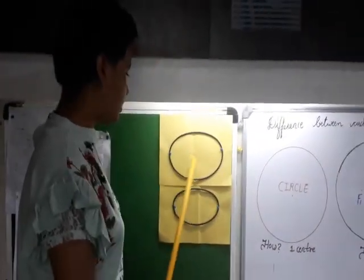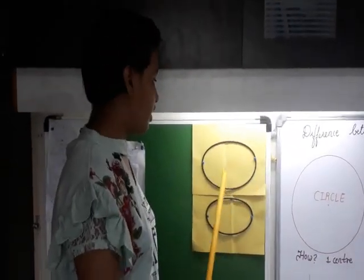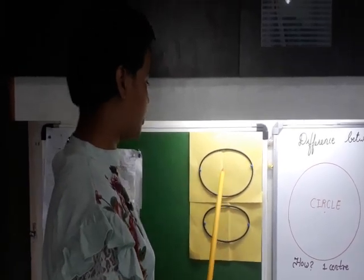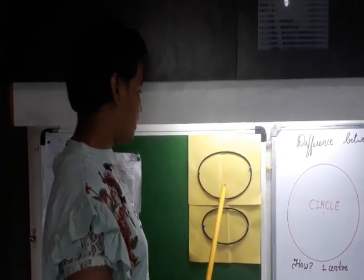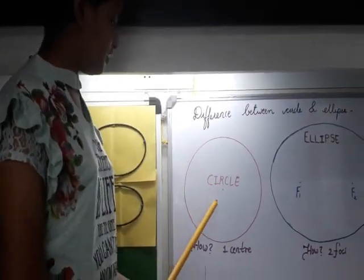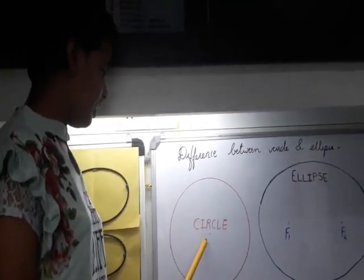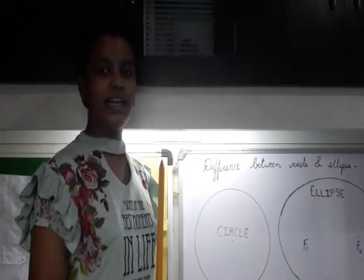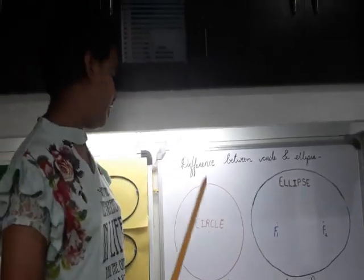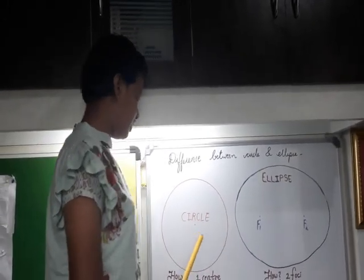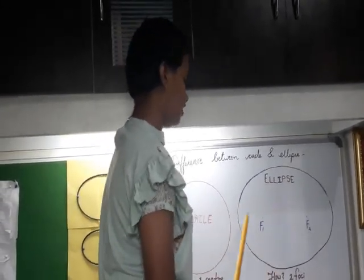As you can see here, there are two elliptical shapes made by simple things available at home. We have made two elliptical shapes by a pressure cooker's rim. You can see here that a circle has one center and an ellipse has two foci. In this activity, we have to prove that a circle has one center and an ellipse has two foci.